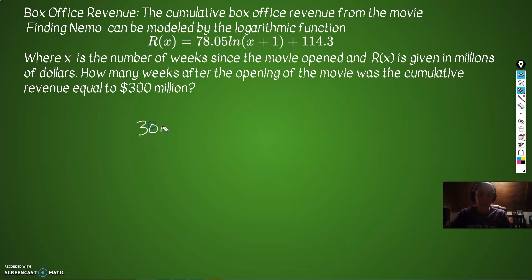How many weeks after the opening of the movie was the cumulative revenue equal to 300 million? Okay, well, they're saying R(x) equals 300 million, solve for x. 300 = 78.05 ln(x+1) + 114.3. All right, first thing we got to do, let's clear out the clutter. Let's subtract 114.3 from both sides.